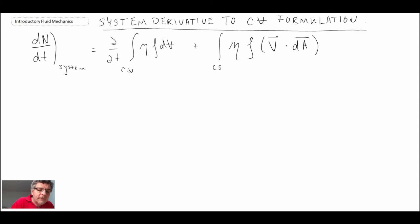So, with this equation, on the left-hand side, what we have is something that relates to the time rate of change of our extensive properties for a system. It's important to note that that is for a system.